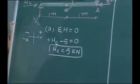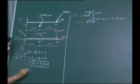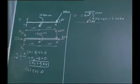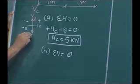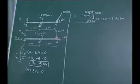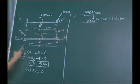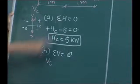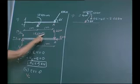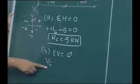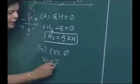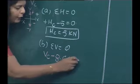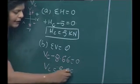The second condition is sigma V equals 0 — algebraic summation of all vertical forces equal to zero. Vertical upward is positive, vertical downward is negative. V_C is in the vertical upward direction, so positive. 10 kilo Newton meters is a moment, so it is not included when considering forces. The vertical force 8.66 is in the downward direction, so minus 8.66 equals 0. Therefore V_C equals 8.66 kilo Newtons.